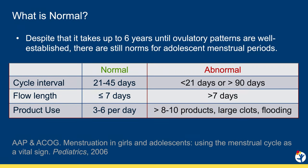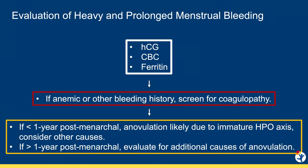Even though anovulatory cycles are really common in adolescence, bleeding that is coming more often than every three weeks, lasting longer than seven days in a row, or resulting in excessive product use, large blood clots, and frequent flooding onto clothes needs to be evaluated. If you're concerned about the amount of bleeding a patient is having, we strongly encourage a CBC to assess for anemia and ferritin to assess for low iron.